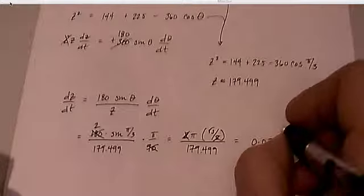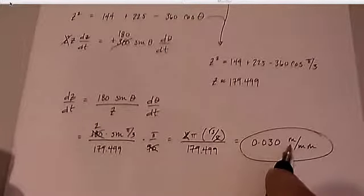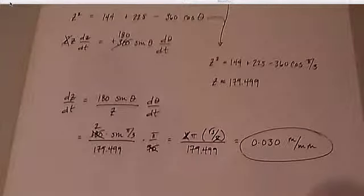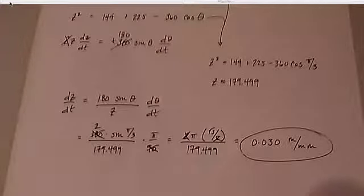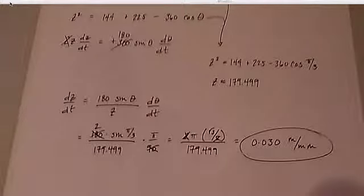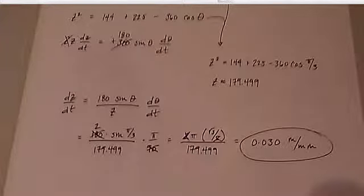That's meters per minute — it doesn't sound like a lot, but remember the angle was opening very slowly at π/90 radians per minute. That is basically how you apply the law of cosines in a related rates problem with a triangle that isn't a right triangle. I hope all this is clear. It's been six videos so it should be crystallizing in your head. I'm more than willing to do extra ones — just shoot me an email with any questions or requests, and I'll be happy to do so.